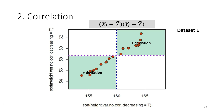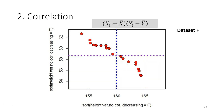For dataset E, you notice all points fall in the positive deviation quadrants — they vary together. Points where body height is smaller than mean also have body weight smaller than mean, and points where body height is larger than mean also have body weight larger than mean. For dataset F, all points fall in the negative deviation quadrants — if one variable is larger than mean, the other is smaller, giving all negative cross products. Both variables vary together but in opposite directions.